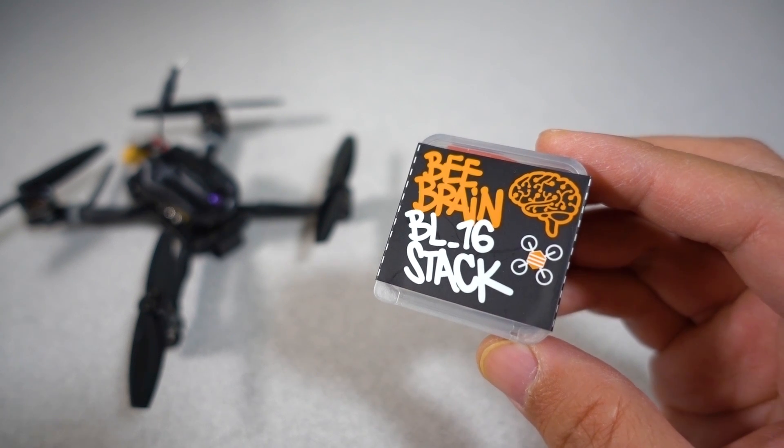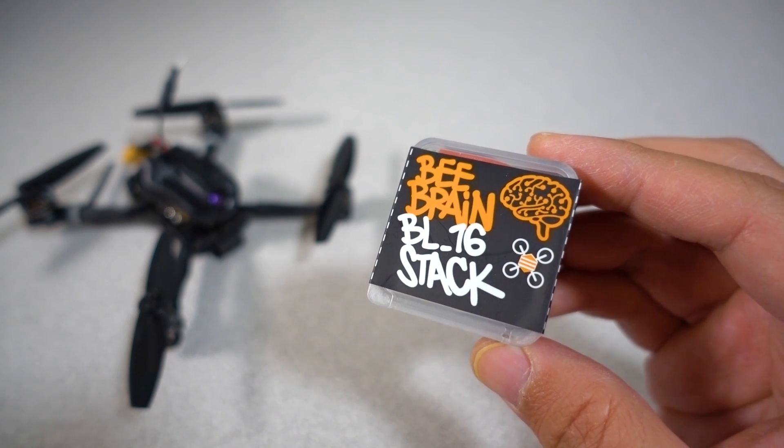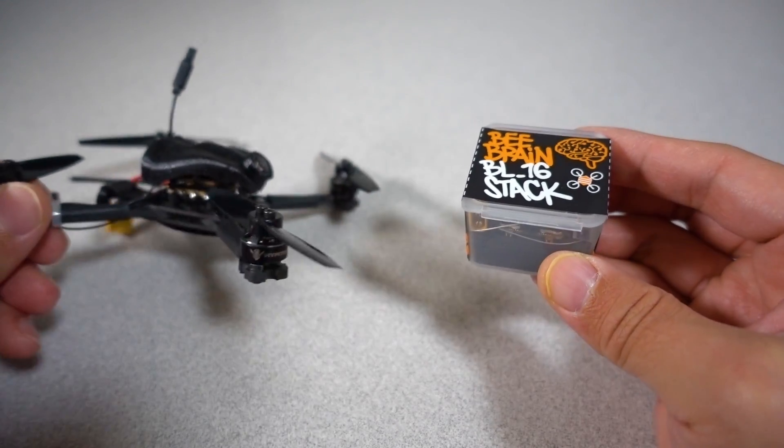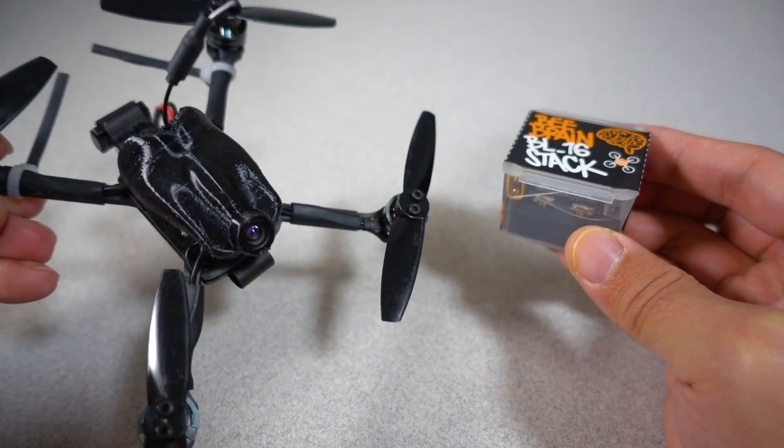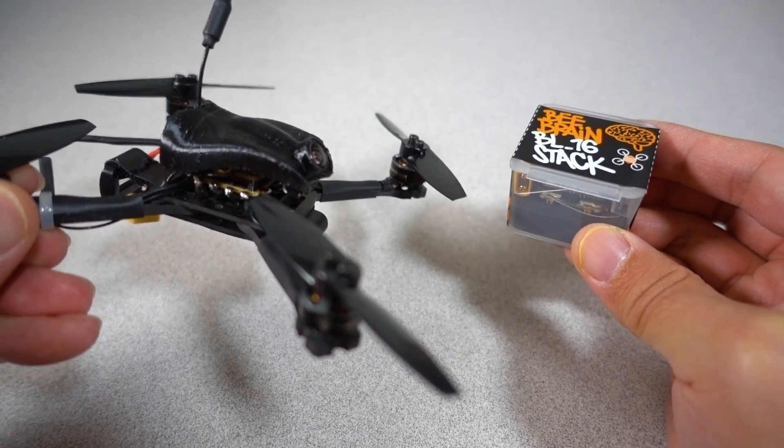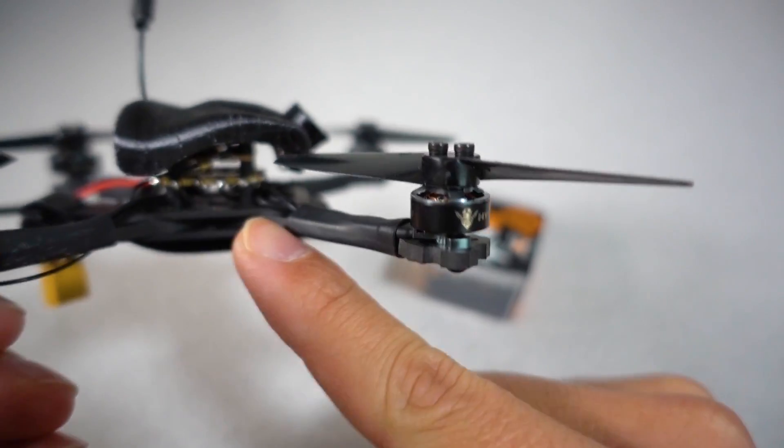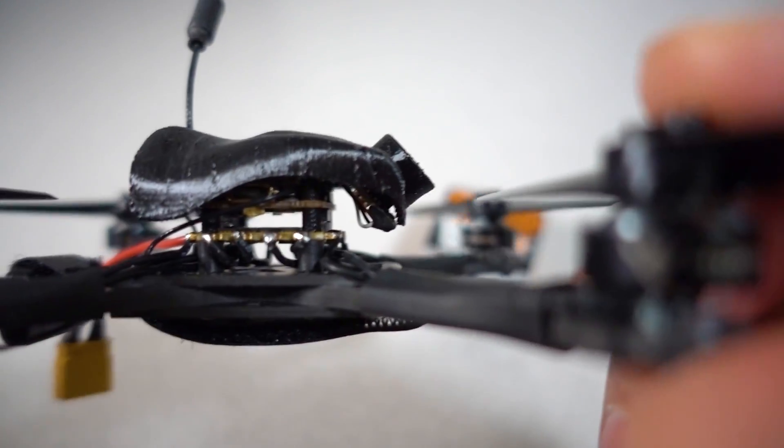Okay, in this video we're checking out the BeeBrain BL-16 stack. I think this is also called the Hive-16 stack. It's the one that I reviewed a prototype on, and this little model that they sent me is a 3-inch ultralight. It's got the same Hive-16 stack in there, which you can't really see too well.